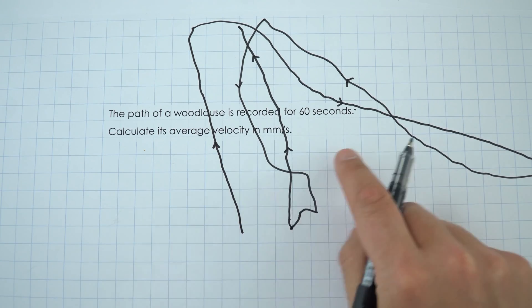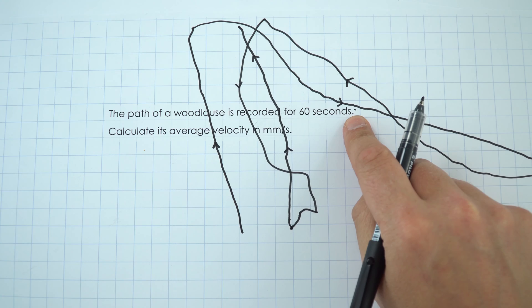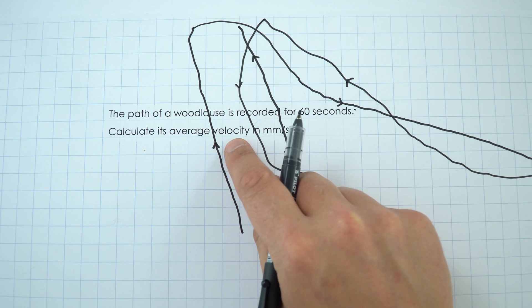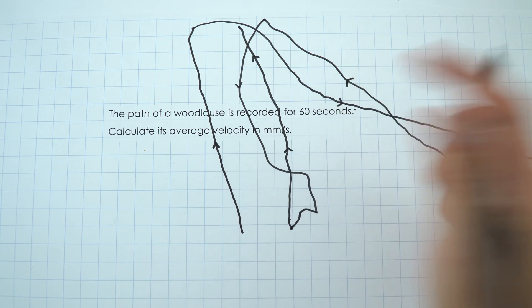So this is the path that the woodlouse took as it wandered around for 60 seconds. We need to calculate its average velocity in millimeters per second.